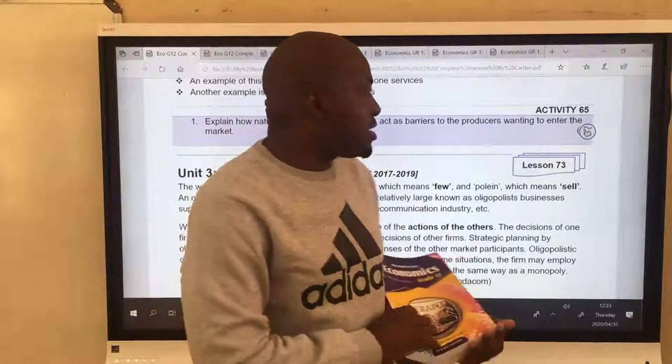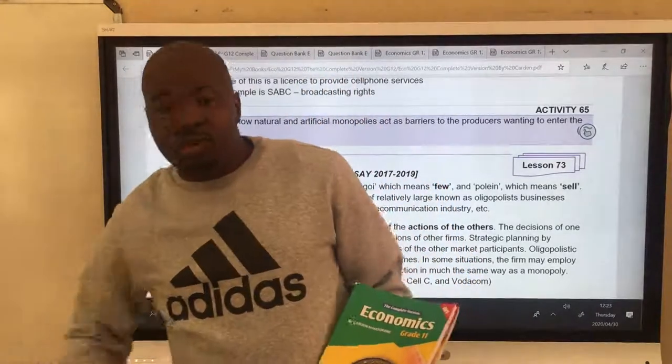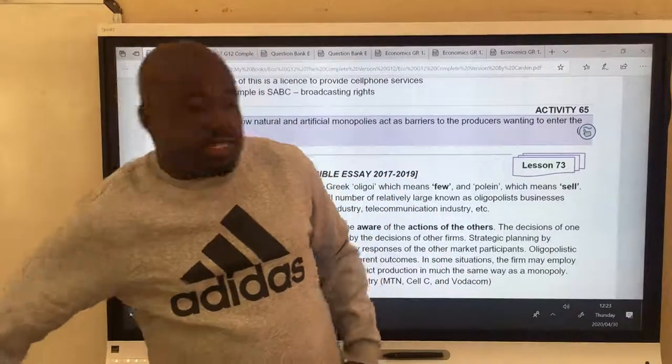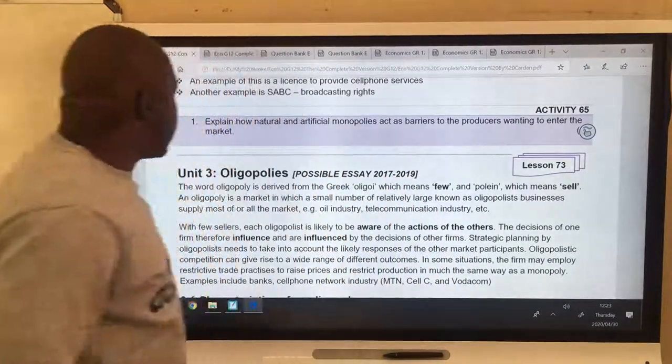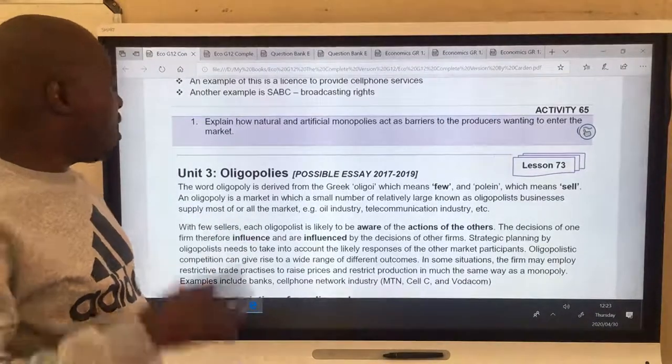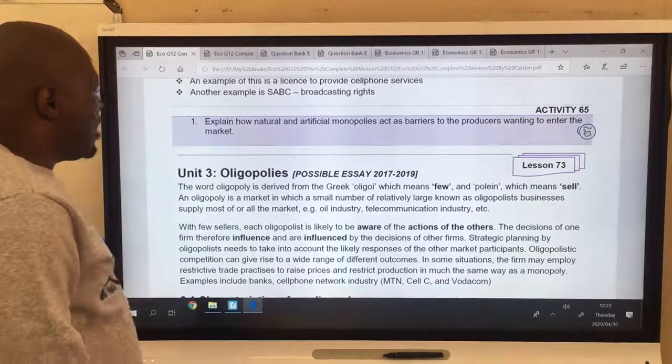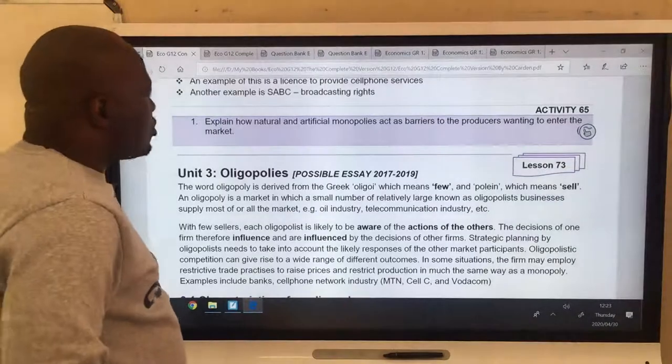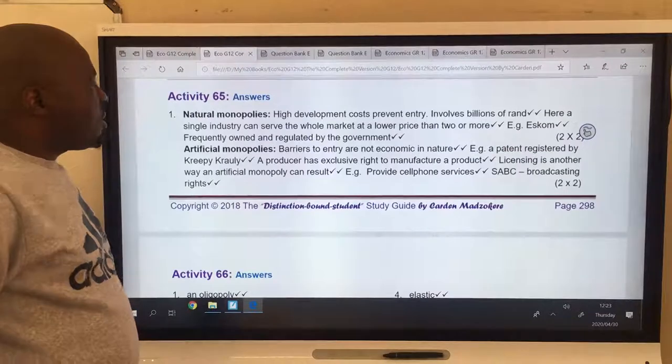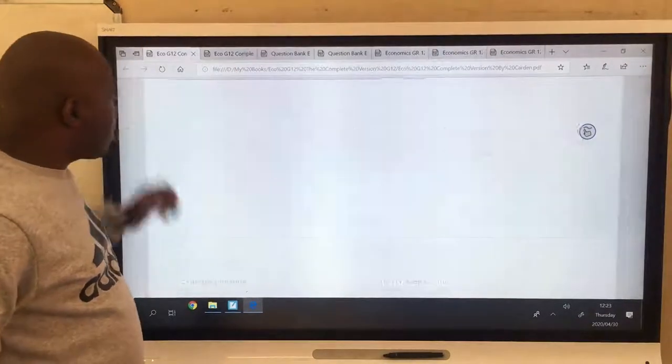Good day, grade 12s. Welcome to lesson number 73 from my textbook, The Distinction Bound Student, Grade 12. You also have grade 11 and grade 10. Let's get started. In this lesson, we are introducing oligopolies. I've mentioned them in person, but now I'm going to go in depth. Before we go there, we had a moment in the previous lesson: explain how natural and artificial monopolies act as barriers to entry. You can pause and answer and mark yourself. Back to the lesson.